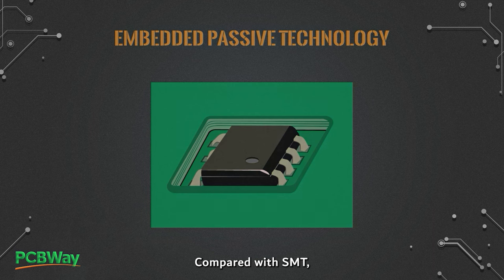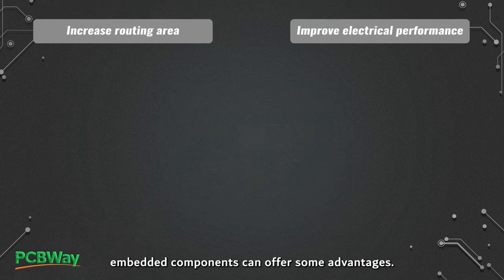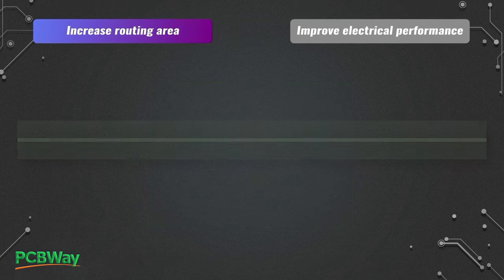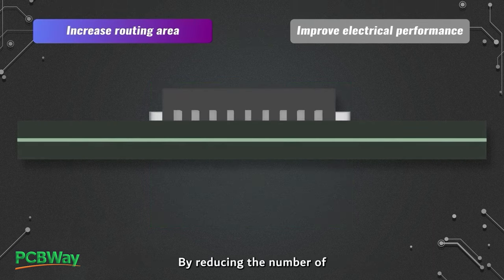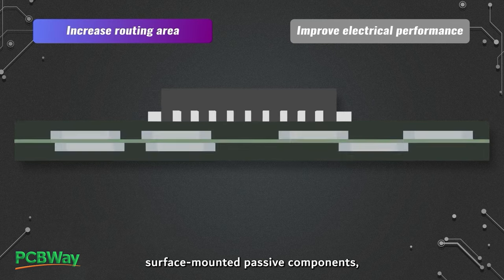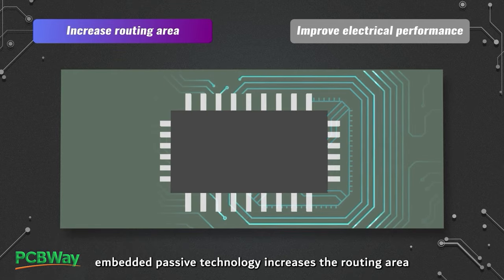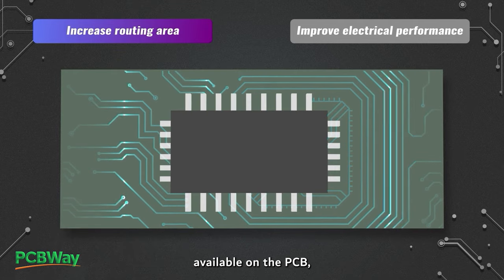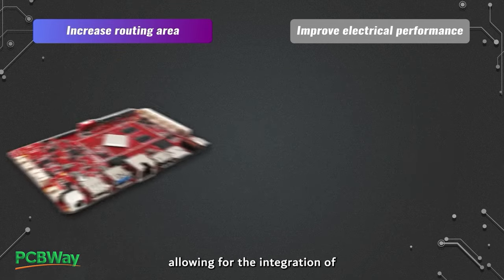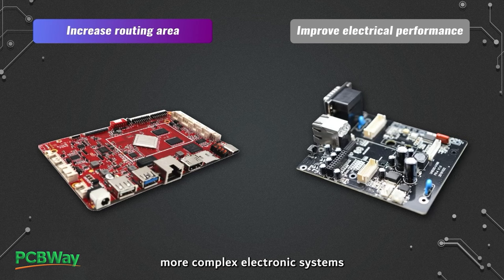Compared with SMT, embedded components can offer some advantages. By reducing the number of surface-mounted passive components, embedded passive technology increases the routing area available on the PCB.